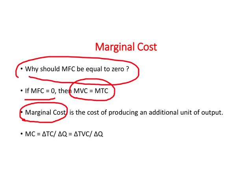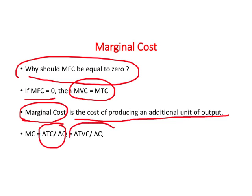Marginal cost is defined as the cost of producing an additional or extra unit of output. We can measure it as change in total cost divided by change in output, or as change in total variable cost divided by change in output. Both expressions give exactly the same number, and that number we call marginal cost.